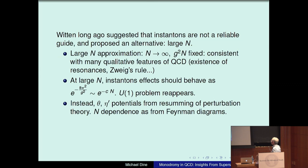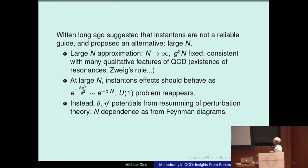Large N is the limit of an SU(N) gauge theory where N goes to infinity with G squared N fixed. As Ed stressed, there are many qualitative features of QCD — such as the existence of stable resonances and Zweig's rule — which are accounted for by such a picture, particularly by the assumption that N equals 3 is not too bad an approximation to N equals infinity. At large N, Witten also noted that instanton effects should behave as e to the minus 8 pi squared over G squared, and since G squared goes like 1 over N, these would go like e to the minus CN — which doesn't sound good, as then the U1 problem reappears.